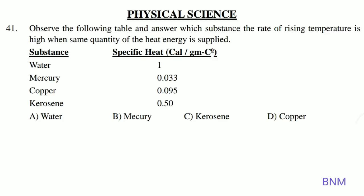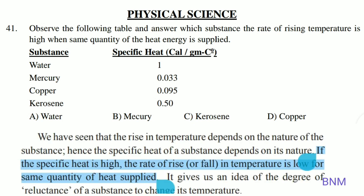First, observe the following table and answer which substance has a high rate of rising temperature when the same quantity of heat is supplied. The specific heat value relates to the same quantity of heat energy supplied. Mercury has a specific heat value of 0.033 — the lowest value — so mercury has the highest rate of rising temperature. B is the right answer.